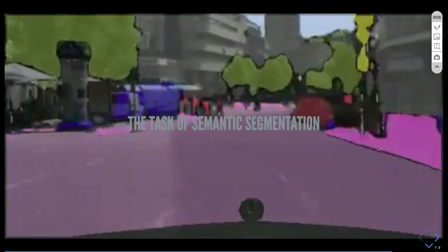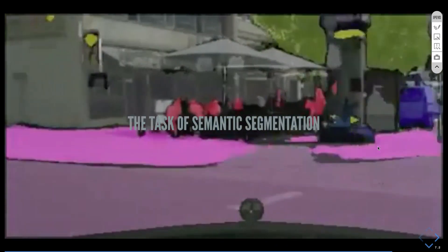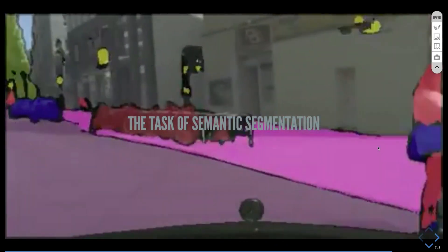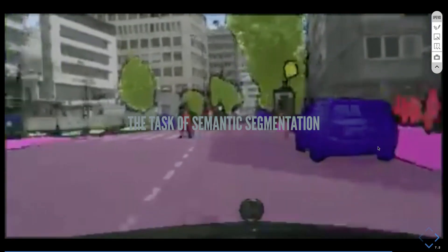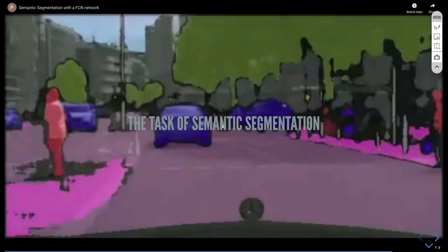When this car drives around, for each pixel around it at all times, your algorithm, your neural network, your convolutional neural network, needs to predict what object it belongs to.